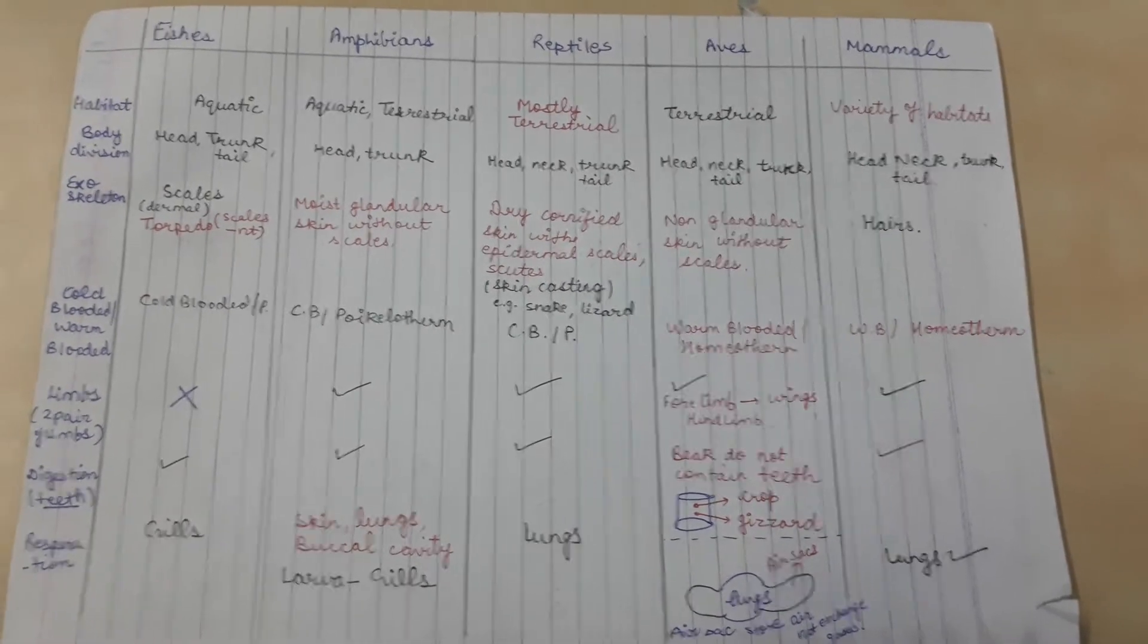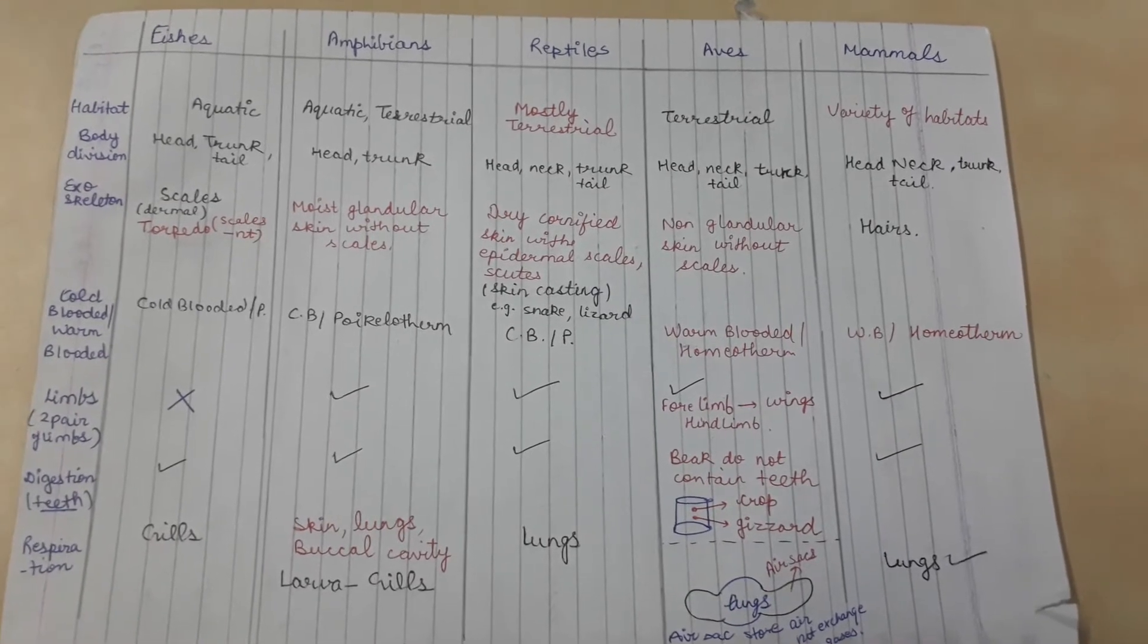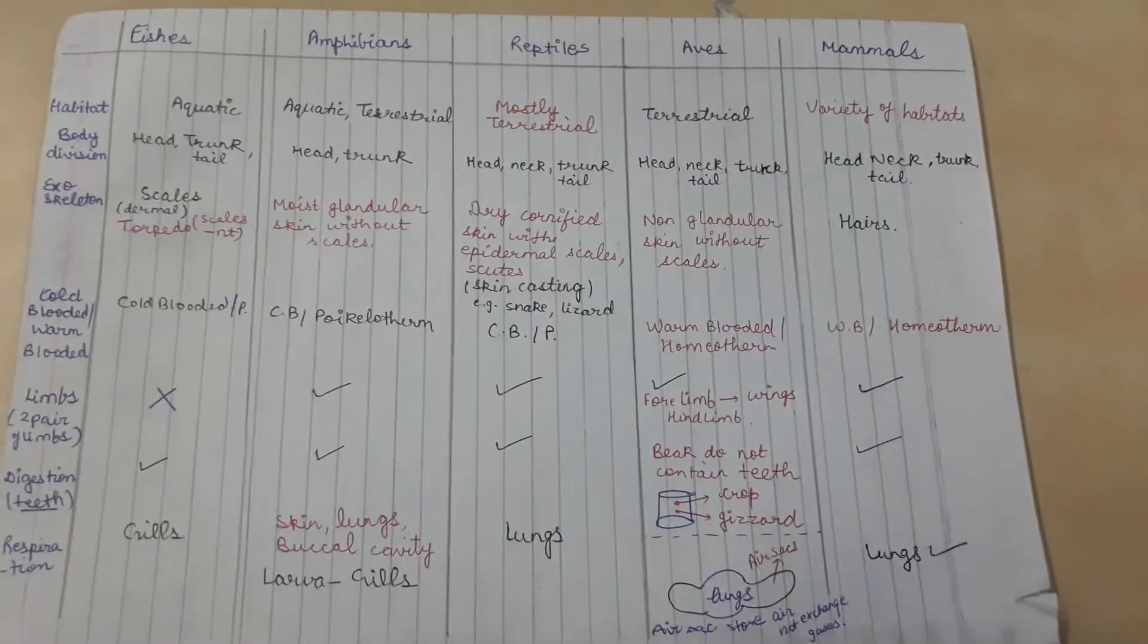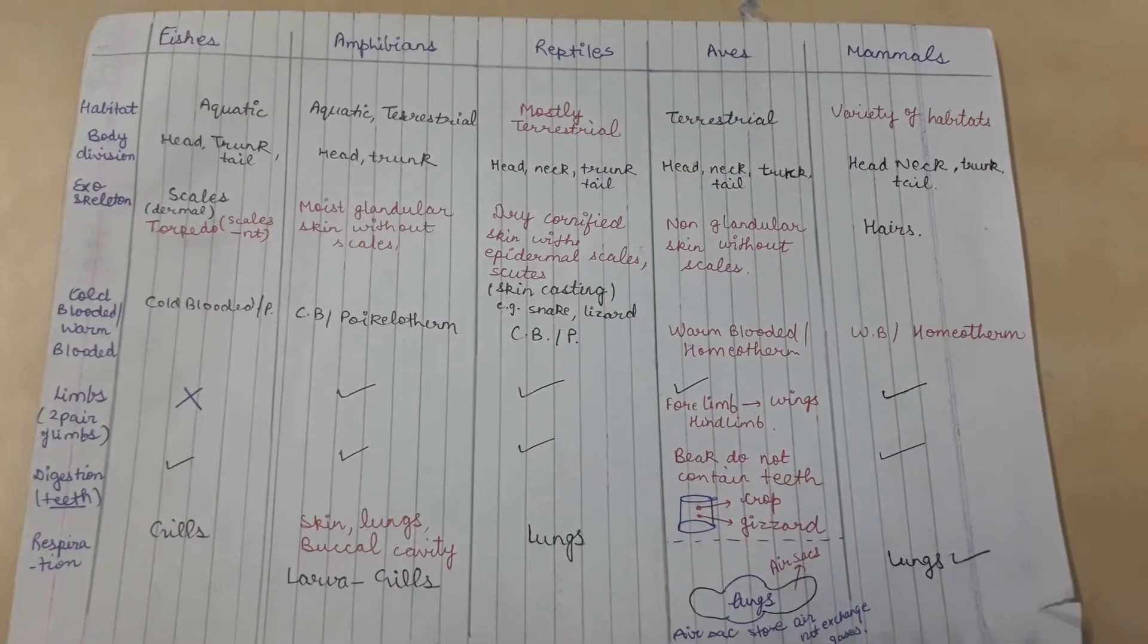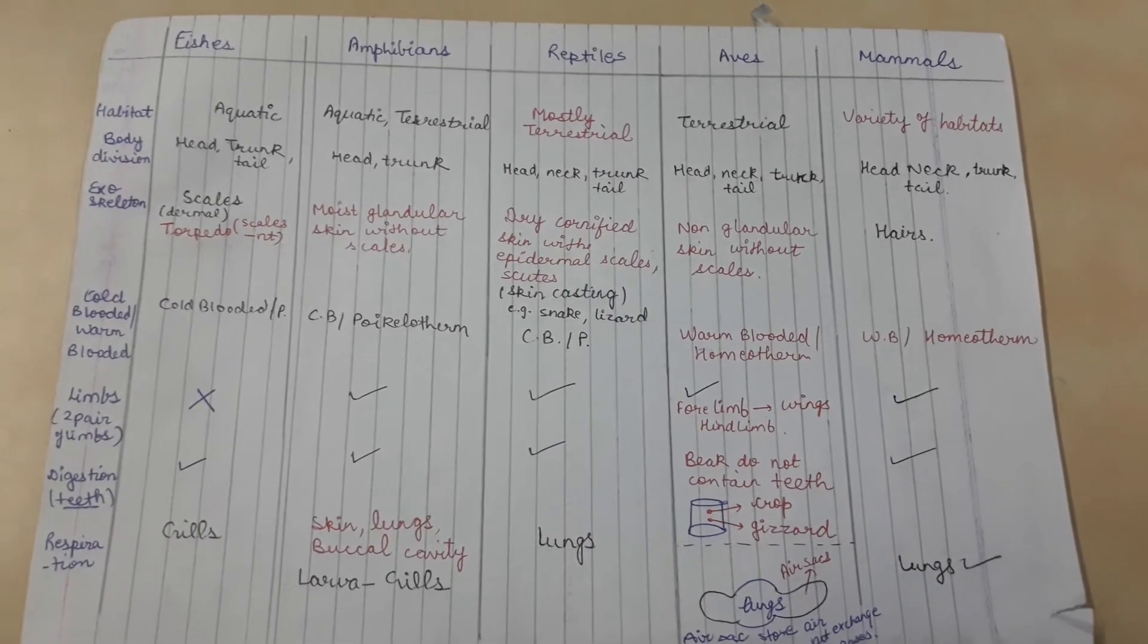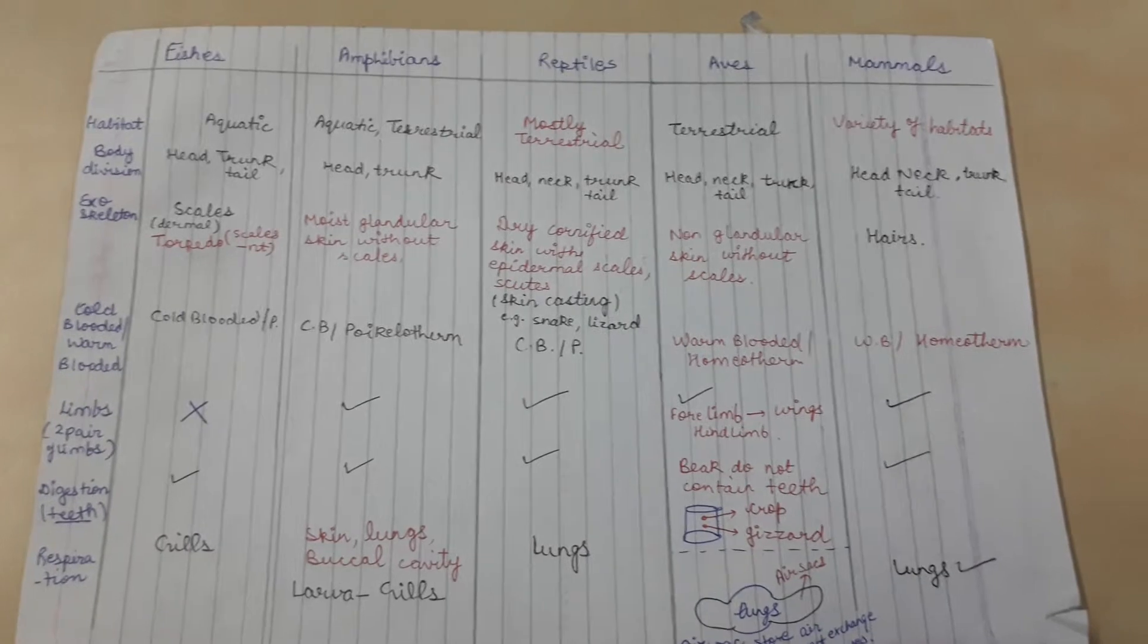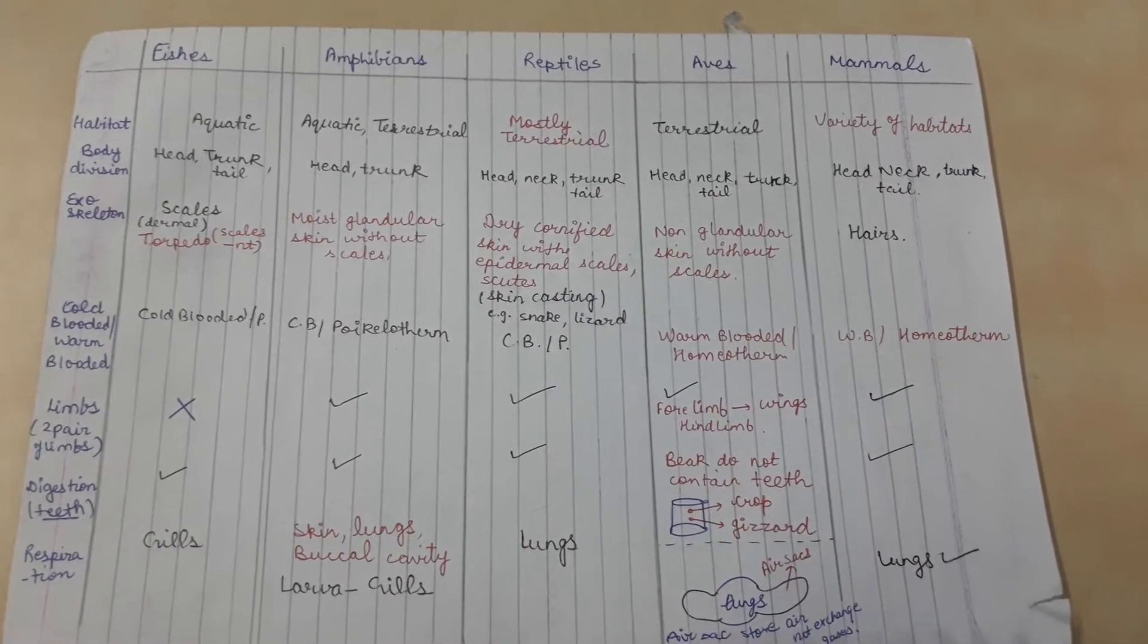Mammals live in a variety of habitats. I'm letting you know that all the red marks and things written in red are really important, so focus on those. About body division, fishes are divided into head, trunk, and tail. Amphibians have only head and trunk. Reptiles have head, neck, trunk, and tail.